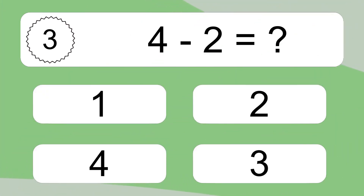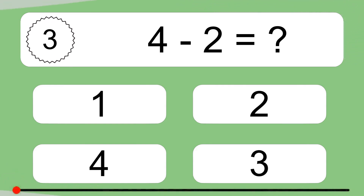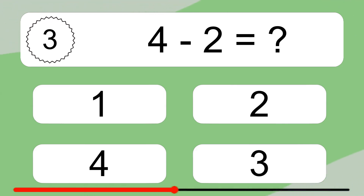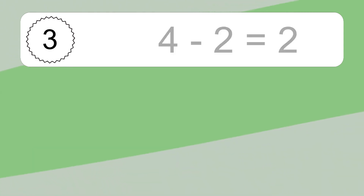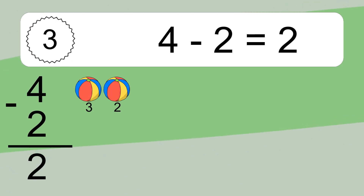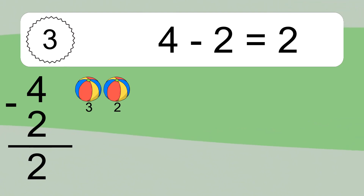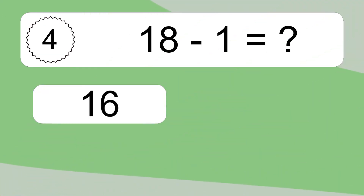4 minus 2 equals what? 4 minus 2 equals 2. Let's count it: 3, 2.